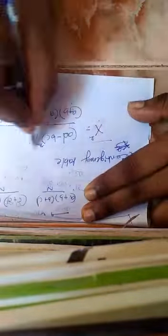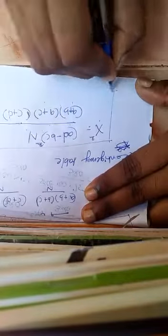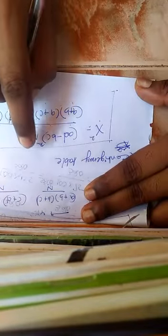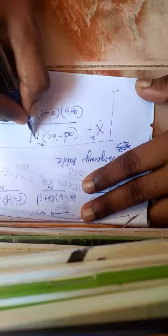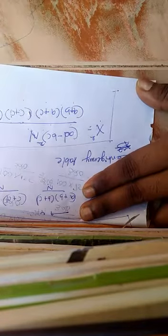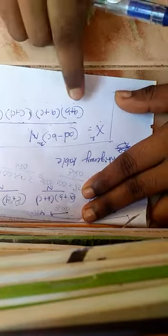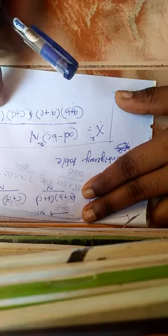That formula is chi square equal to ad minus bc square into n. n is total value, column total and row total divided by a plus b, a plus c, c plus d, b plus d.